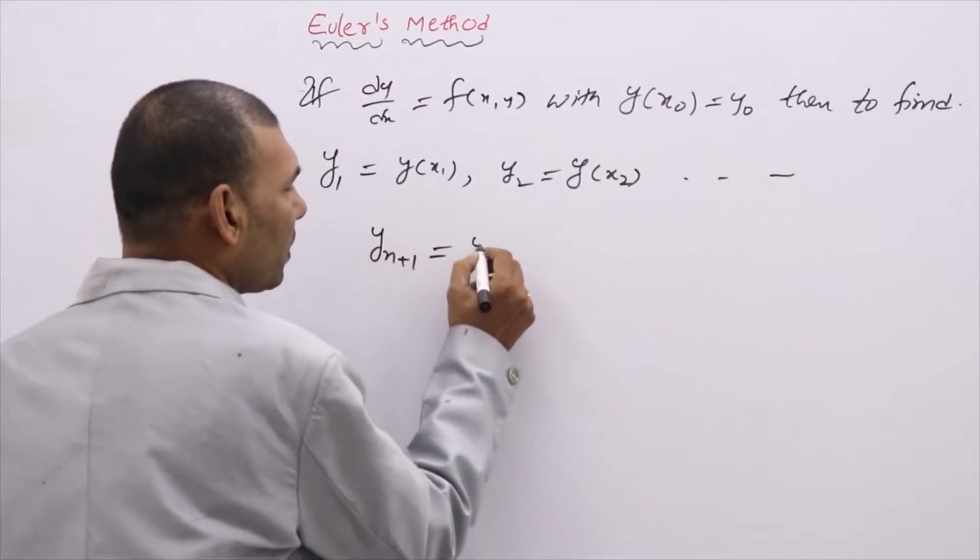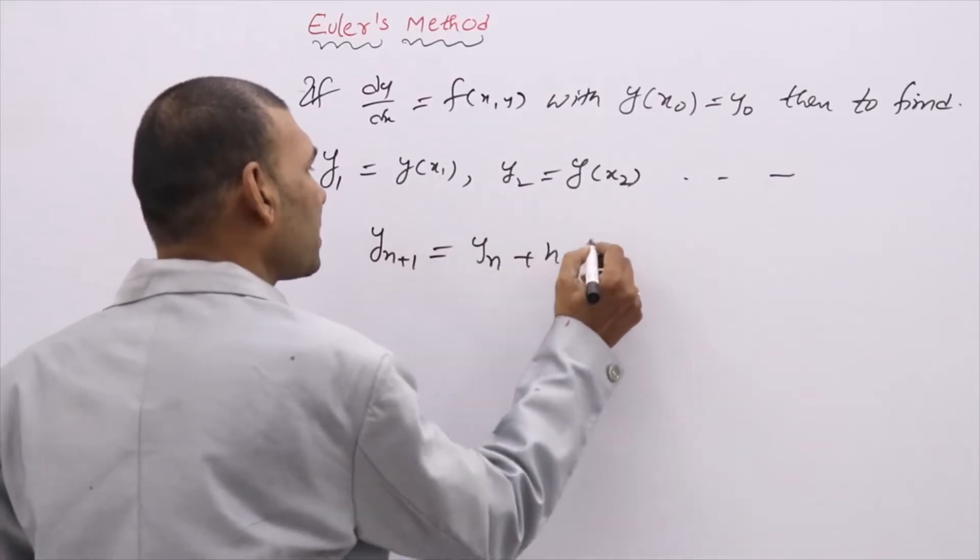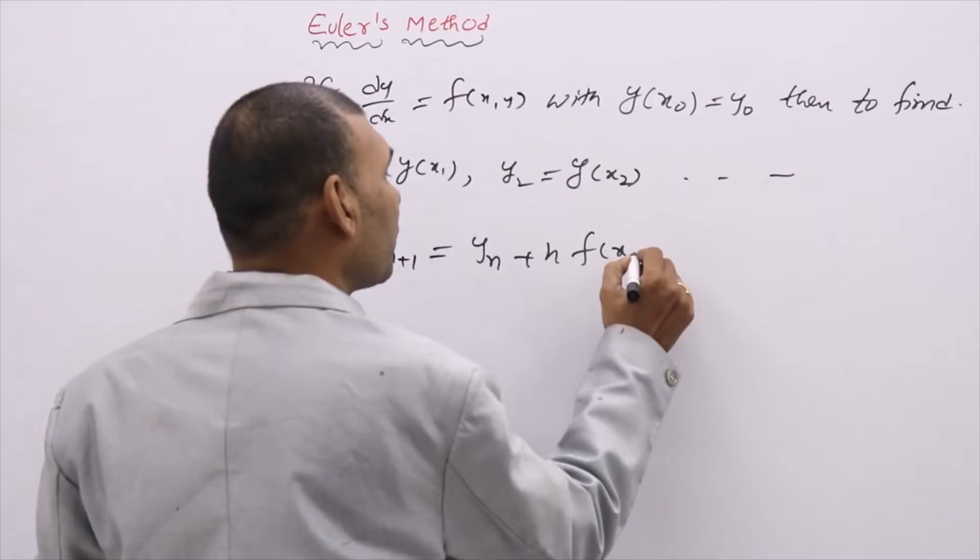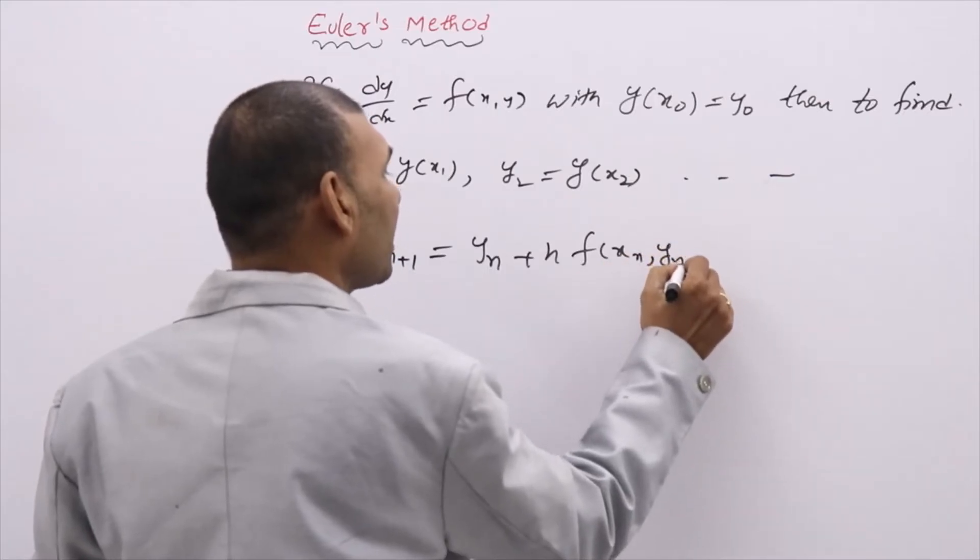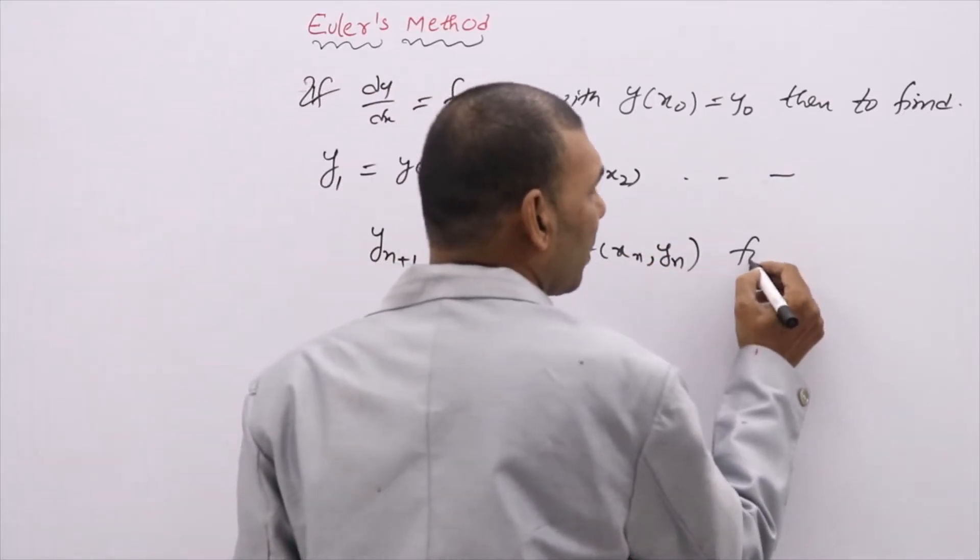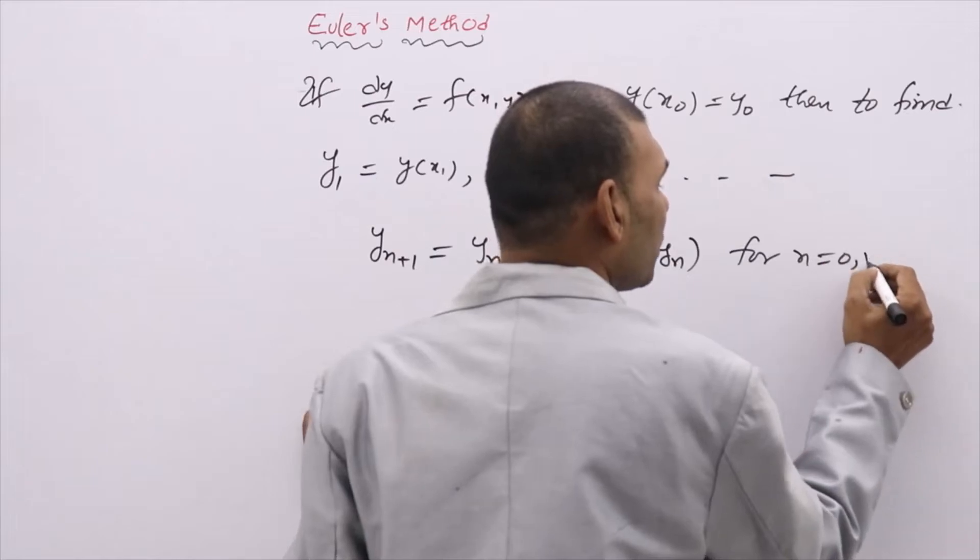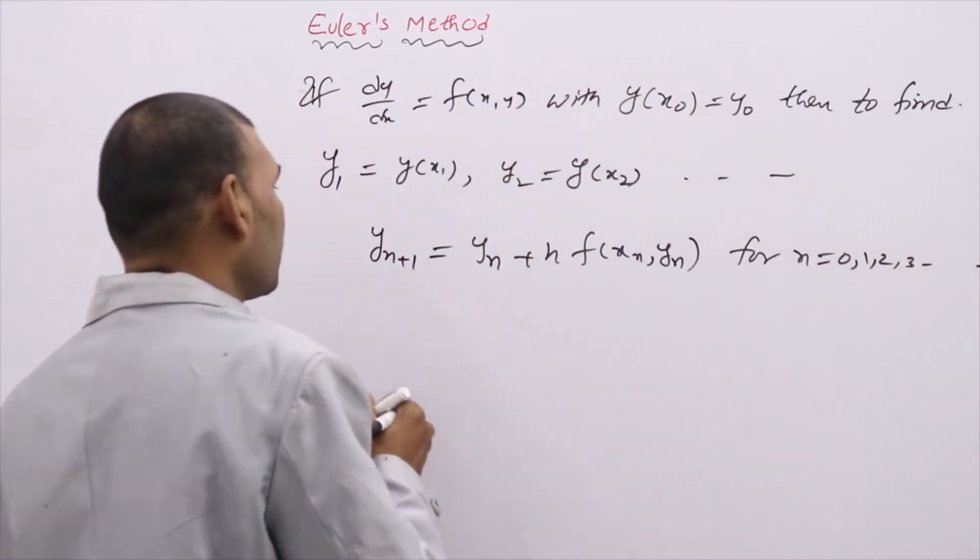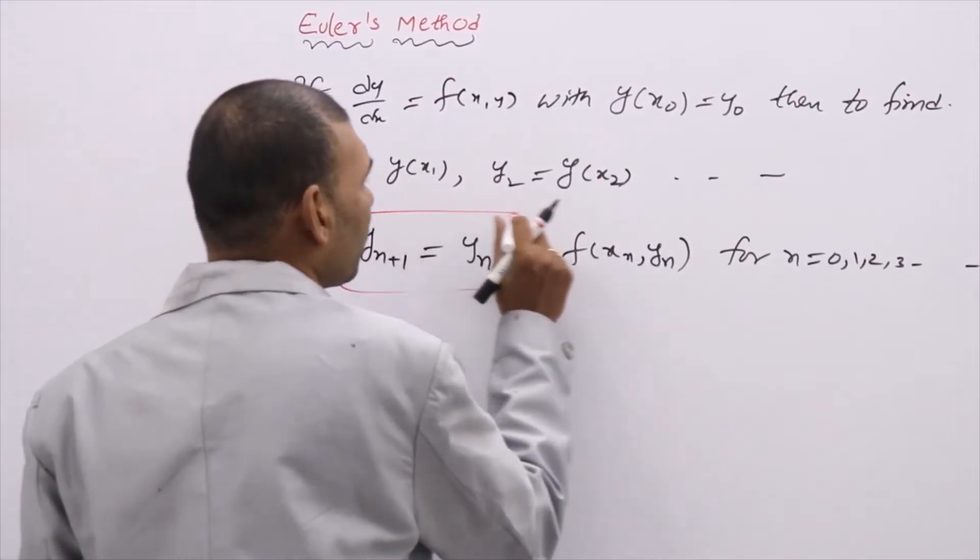yₙ₊₁ = yₙ + h·f(xₙ, yₙ) for n = 0, 1, 2, 3, and so on. So this is yₙ₊₁.